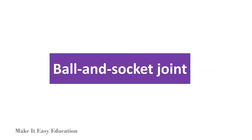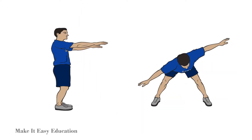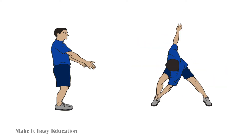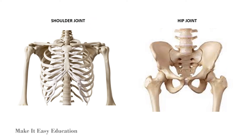Ball and socket joint: In a ball and socket joint, the ball-shaped end of one bone fits into the cup-shaped socket of another bone. This type of joint allows movement in all directions. The shoulder and the hip joints are examples of a ball and socket joint.